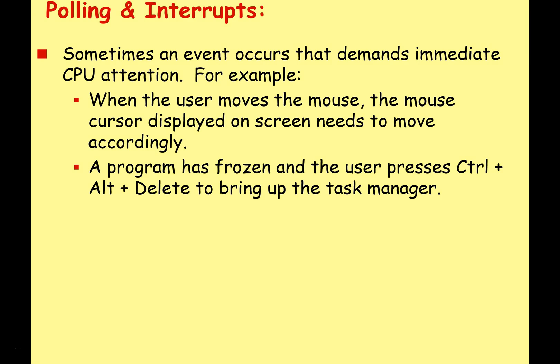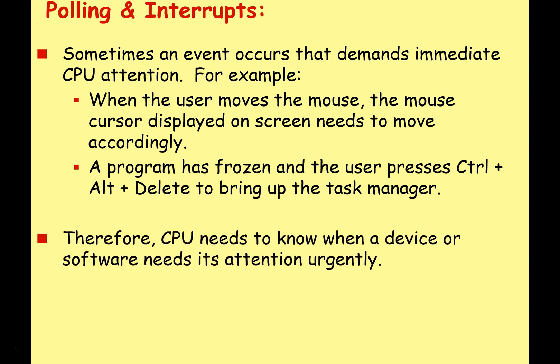Sometimes an event occurs that demands immediate CPU attention. For example, when the user moves the mouse, the mouse cursor displayed on screen needs to move accordingly. Or when a program has frozen and the user presses Ctrl+Alt+Delete on a Windows platform to bring up the task manager — they need this to happen straight away, to interrupt whatever was happening. Therefore, the CPU needs to know when a device or software needs its attention urgently.